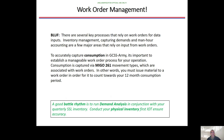Consumption is captured through the 261 movement type. A lot of units use 201, but that's wrong — you will not capture consumptions with a 201 movement code; you have to use a 261 movement code. In other words, when you issue material to a work order, that work order accounts towards your 12-month consumption period.